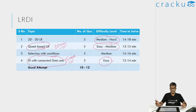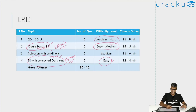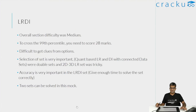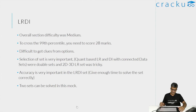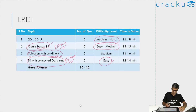Somebody who is a 99 percentiler in CAT, if he is able to get both doable sets done within 25 to 30 minutes, with the remaining 10 minutes, if he attempts the selection with conditions, he will at least get a few questions correct because all of them are individual questions. Overall, I think if you can solve two sets you will get 99 percentile — this is the case even in actual CAT. There are two sets which are definitely easier: the DA set and the prime numbers and N cross N board set.